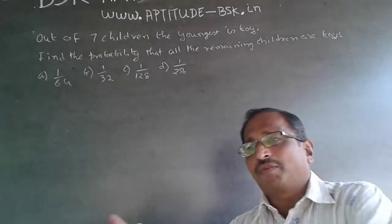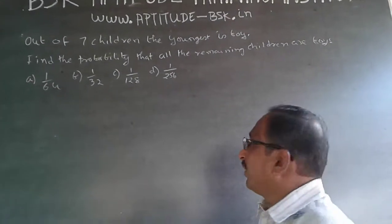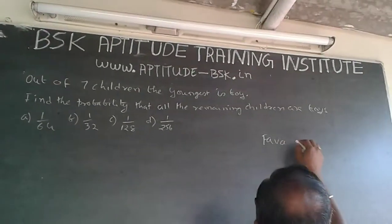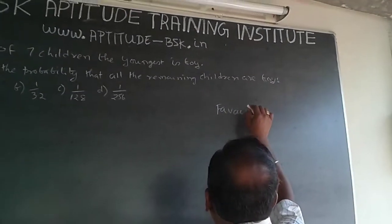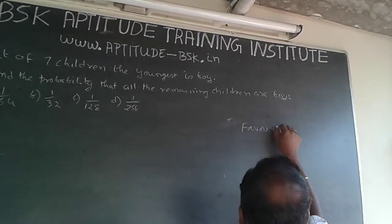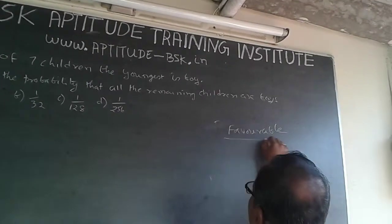It is the chances of getting out of a total number. It is always favorable possibilities divided by total possibilities.